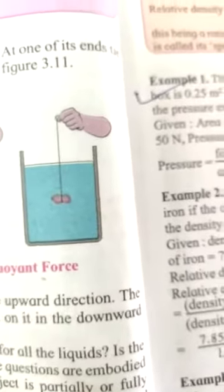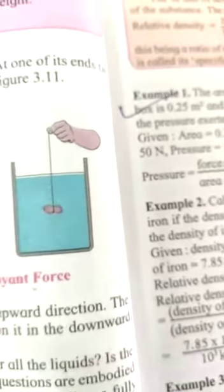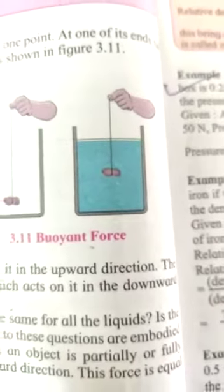A buoyant force acts on it in upward direction. The weight of stone acts downward. This stone, weight of stone acts in downward direction. And the weight of water acts, the force of water acts in upward direction.